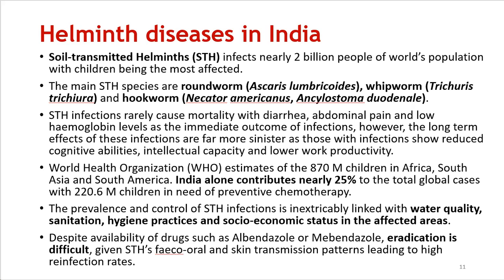So how does that affect India? When we look at soil-transmitted helminths, we note that 2 billion of the world's population are actually affected. The main species in India turn out to be the roundworm, the whipworm, and two species of hookworm. STH infections rarely cause mortality, but they lead to a lot of discomfort, diarrhea, abdominal pain, low hemoglobin levels, and long-term effects include reduced cognitive abilities, intellectual capacity, and therefore lower work productivity — trapping these poor people in a cycle of poverty.